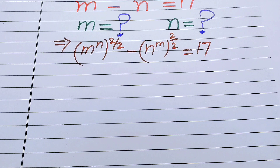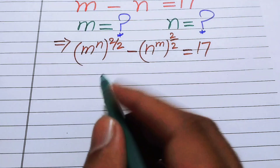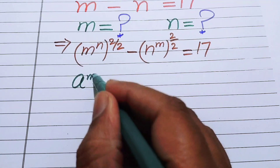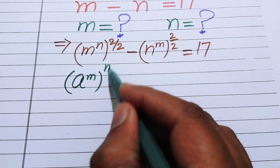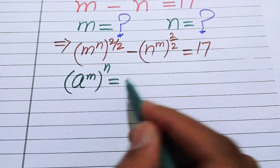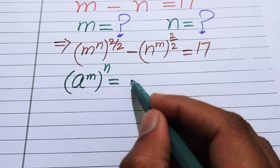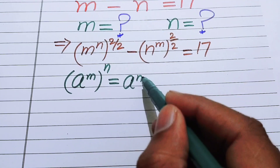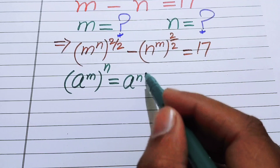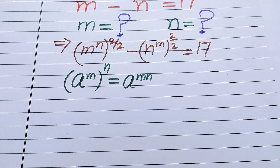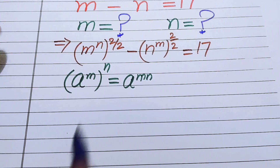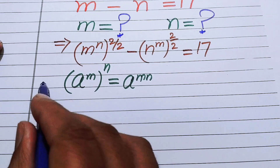In the next step, we use a nice exponential law: if we have a to the power of m, to the power of n, it equals a to the power of m times n. We can now apply this law to our equation.